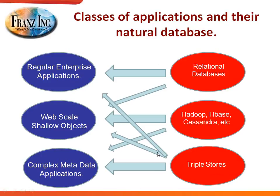Summarizing when to use a graph database or triple store: when you need ultimate flexibility — modeling knowledge and assets with hundreds of thousands of classes, adding new classes and features every day, or doing a lot of rules and reasoning. When you need ultimate linkability that other databases can't provide and only semantic technology will help. When you need pattern recognition and network analysis. And when you need event processing with geospatial, temporal reasoning, and social network analysis combined with flexible metadata.